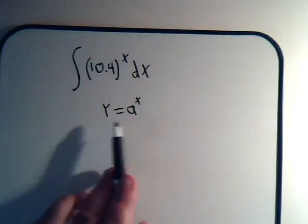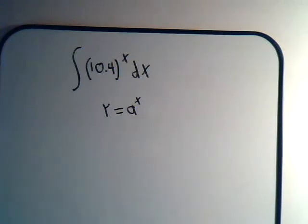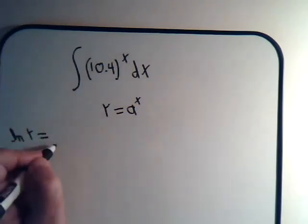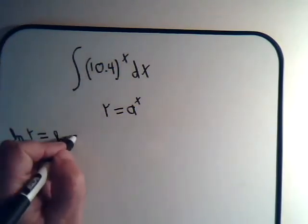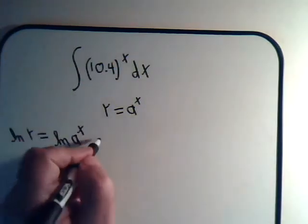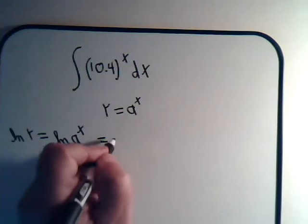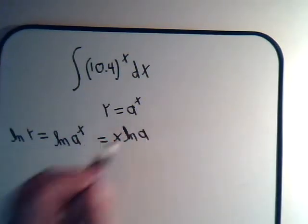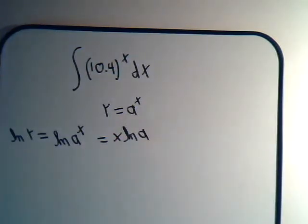What we want to do is take the natural log of both sides of this. We'll have the natural log of y, and we'll have the natural log of a to the x. And this would be x times the natural log of a.